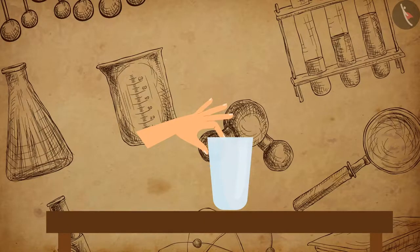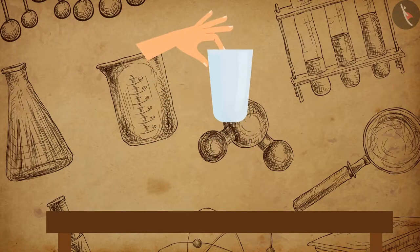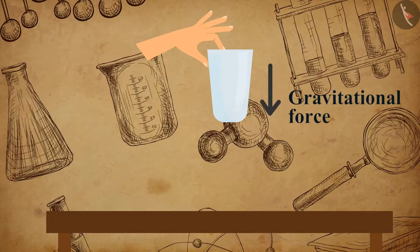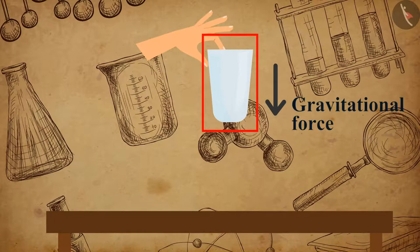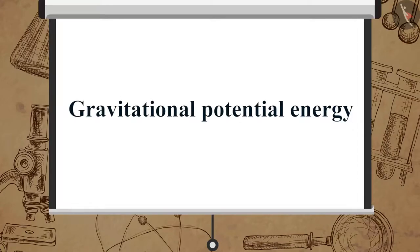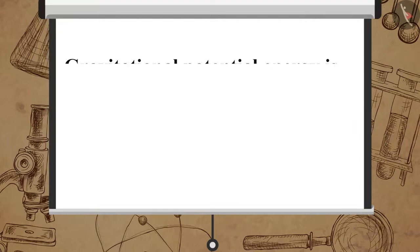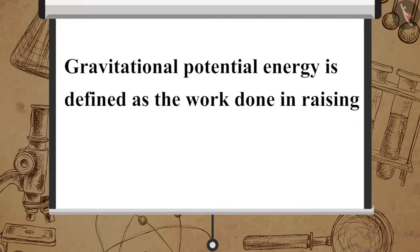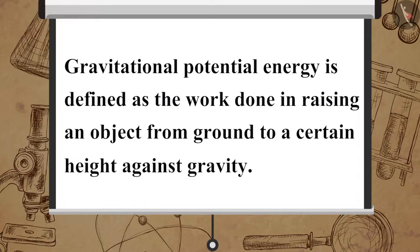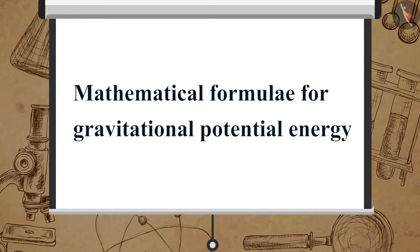Now let us understand what happens to the potential energy of an object when raised to a certain height. When an object is raised to a certain height, work is done on it against gravitational force, due to which it possesses more energy when raised higher. This energy is termed gravitational potential energy. Gravitational potential energy is defined as the work done in raising an object from the ground to a certain height against gravity.